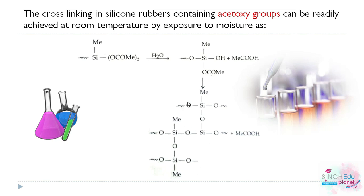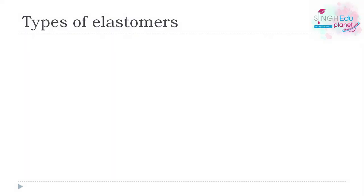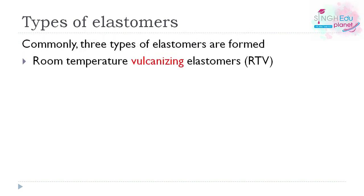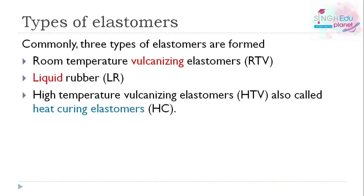There are three types of elastomers: first, room temperature vulcanizing elastomers (RTV); second, liquid rubber; and third, high temperature vulcanizing elastomers (HTV), which are heat-curing elastomers.